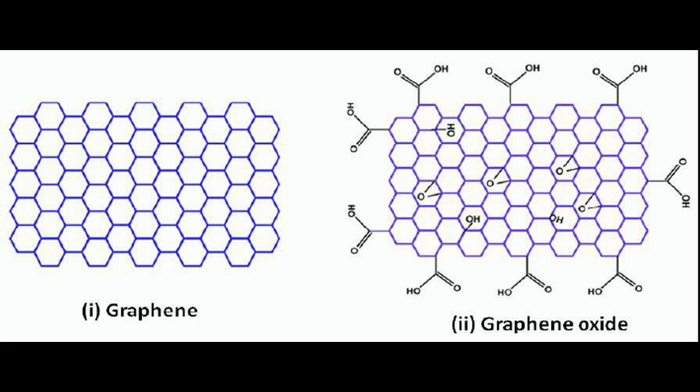One improvement for the usage of graphene in solar cells could be to utilize graphene oxide, which is slightly less conductive, but a better overall charge collector.